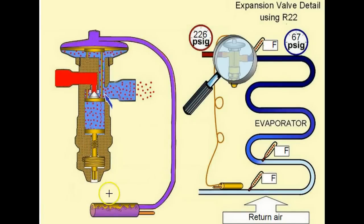So at 75 degrees Fahrenheit, the refrigerant in this bulb is 132 PSIG and that is our opening force, 132 PSIG on the top of the diaphragm on the TXV.